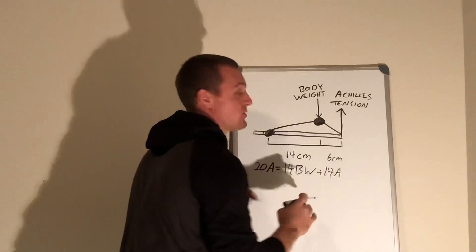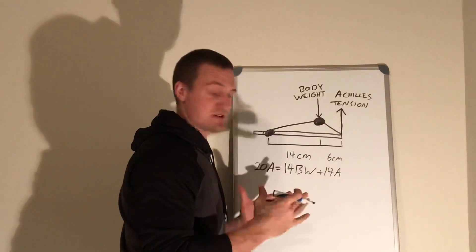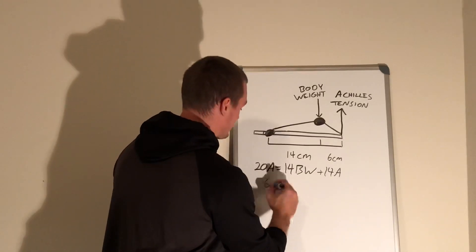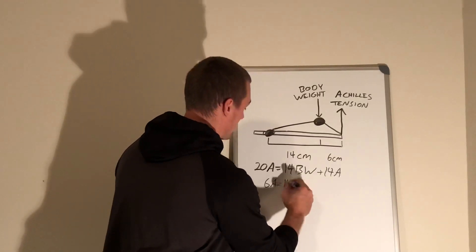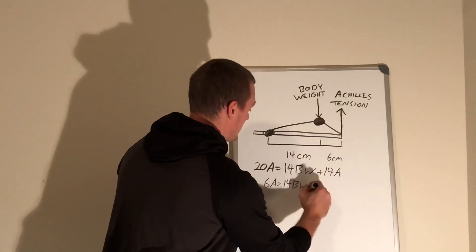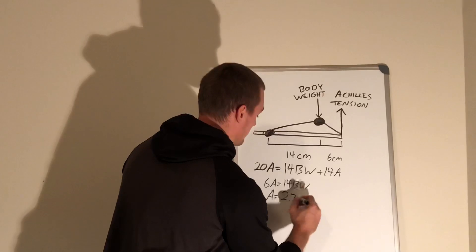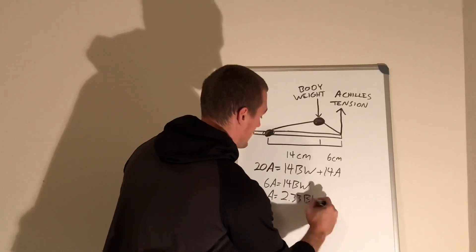We're ignoring all angles just for simplicity. So then we just do a little math: we get 6A equals 14 times body weight, so then A equals 2.33 times body weight.